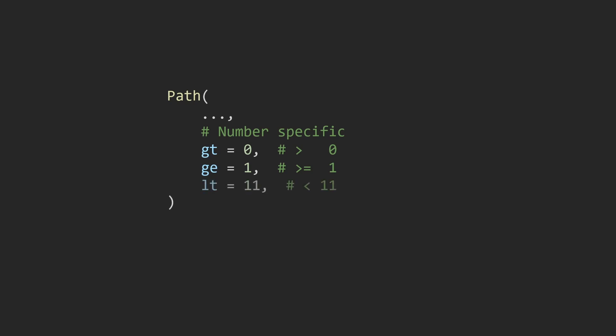We can also use lt, which stands for less than, to ensure a number is less than a certain value — so lt equals 11 means whatever number we pass in has to be less than 11. We can also use the le argument, which stands for less than or equal to — so le equals 10 means whatever value we pass in has to be less than or equal to 10.